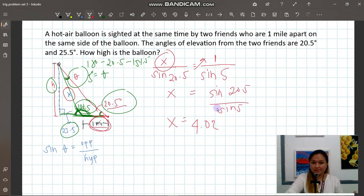That's X. That's not yet our final answer. We have just solved this part of the triangle, which we will use to solve for H. Okay, let's go back. Now we have X.